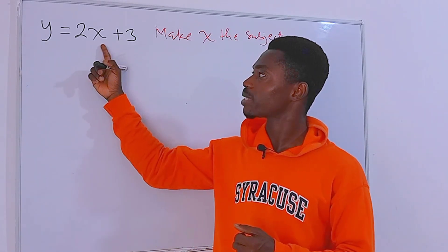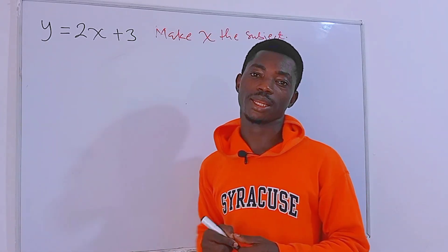Hello guys, how can we make x the subject from this equation of a straight line? Check this out.